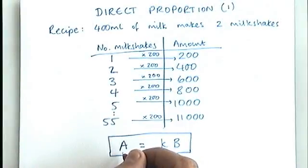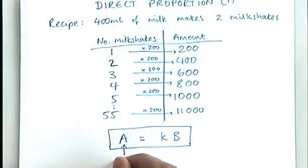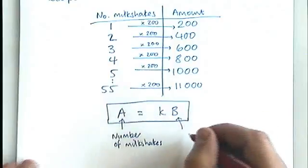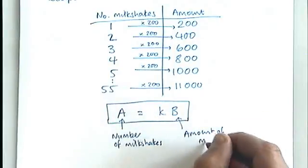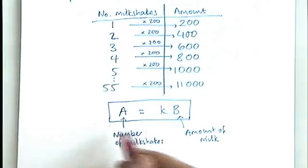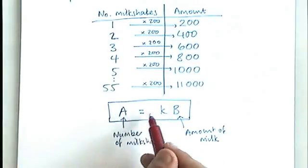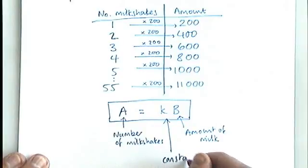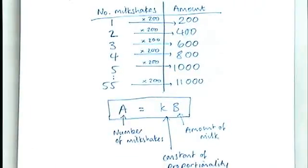So if we use A is the number of milkshakes, and we use B is the amount of milk, we can put some numbers into this formula and work out the value of K. And that's the basic idea behind direct proportion. You are starting out with a formula that looks like this, one number equals K times another number. That K is going to be called a constant of proportionality, and you need to find that in order to work out the rule that is going on here.